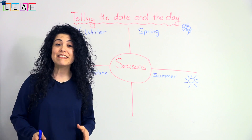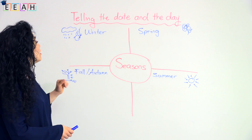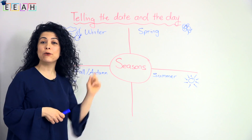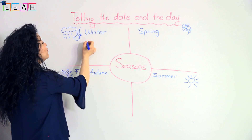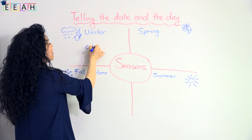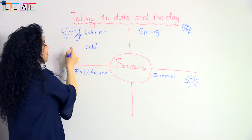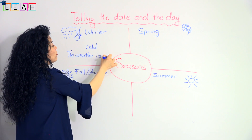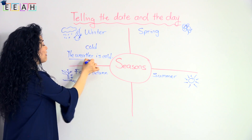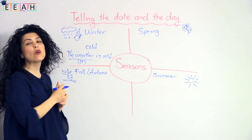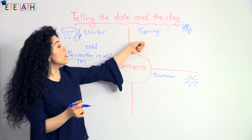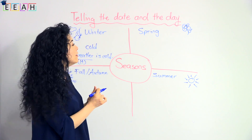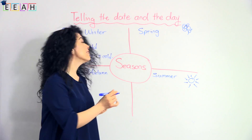The next step is to learn the seasons. Let's have a look. The first one — when it's really cold, we have winter. Winters are cold; the weather is cold in winter. The next one is spring. In spring, the weather gets warmer and we have flowers. In spring the weather is warm.